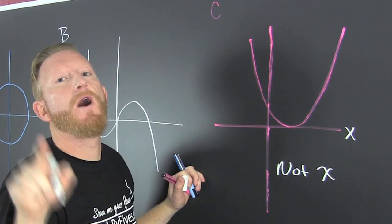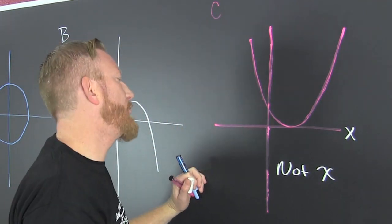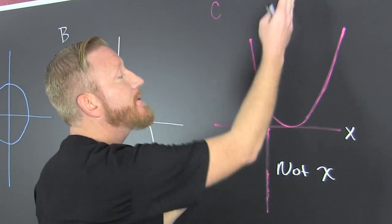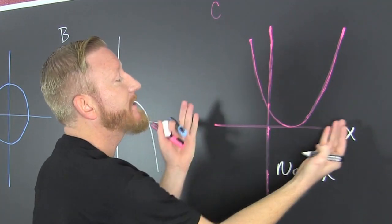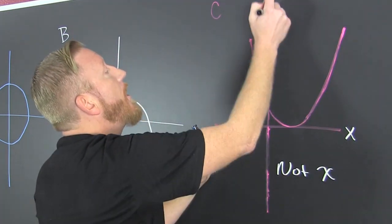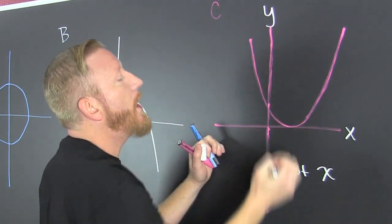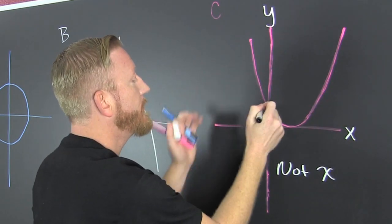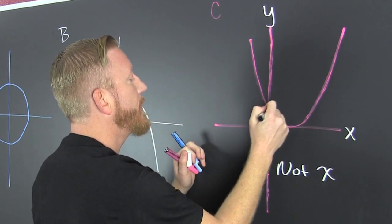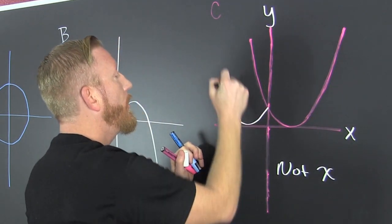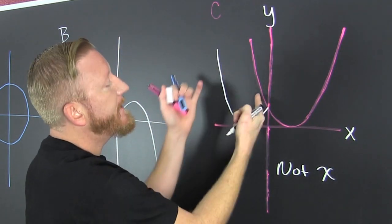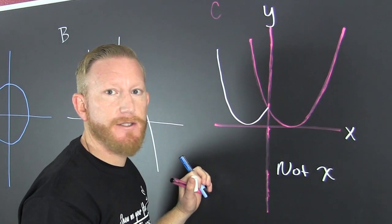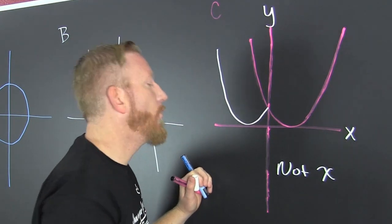What about y? You're like, this is a parabola — parabolas are symmetric. Sure, they're symmetric about the x's. But around the y-axis, if I fold it, those don't lay on top of each other, so it's not y.